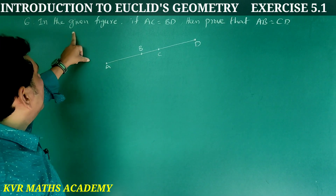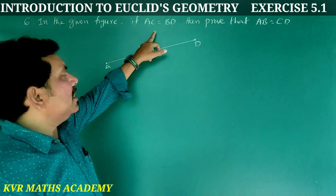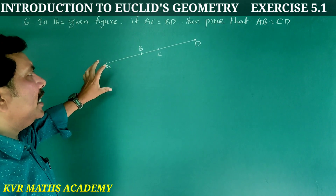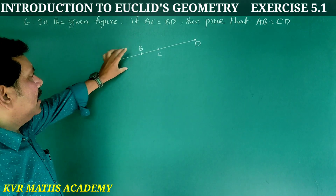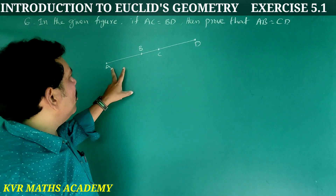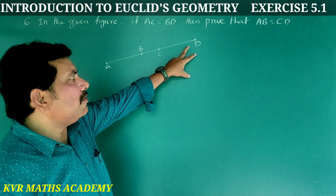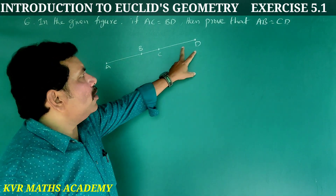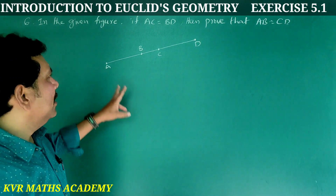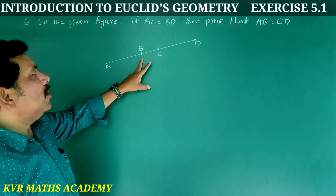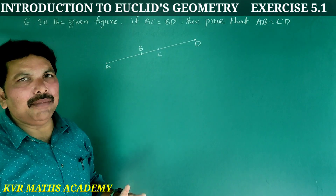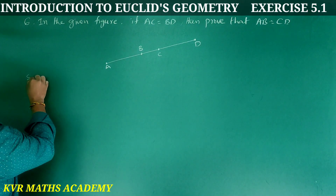Sixth question: In the given figure, if AC is equal to BD, then prove that AB is equal to CD. Given AC equals BD, we have to prove AB equals CD.